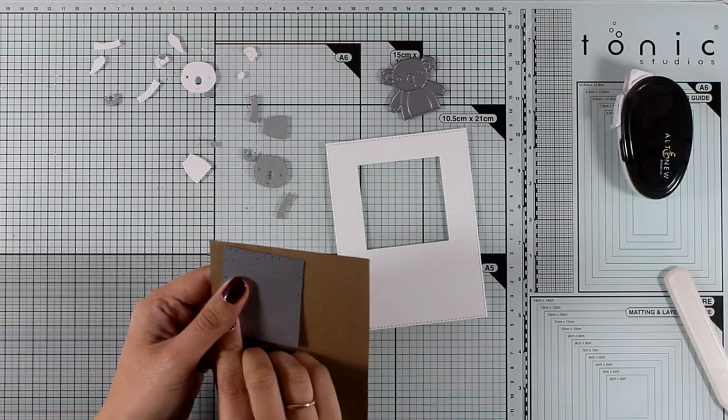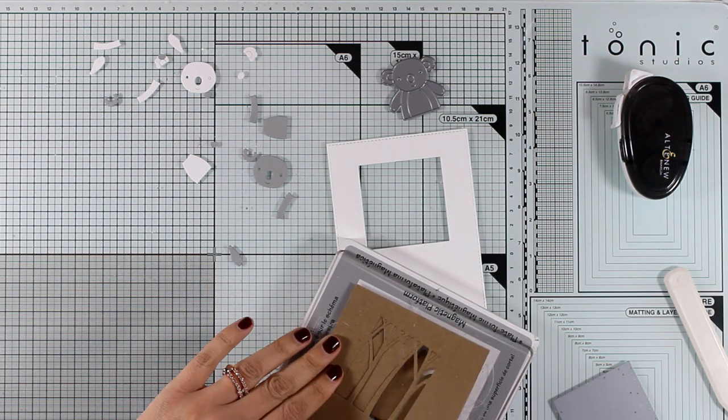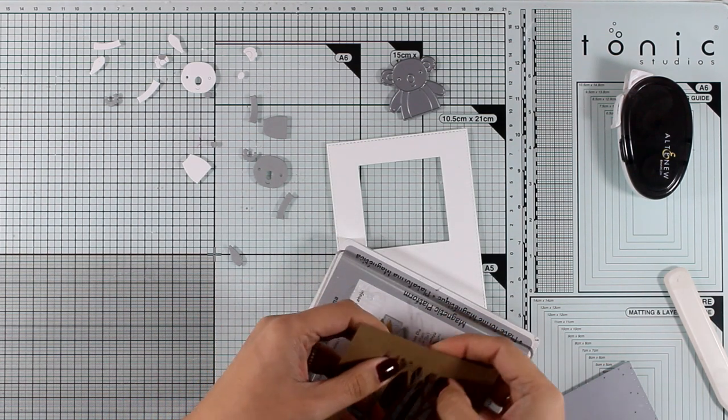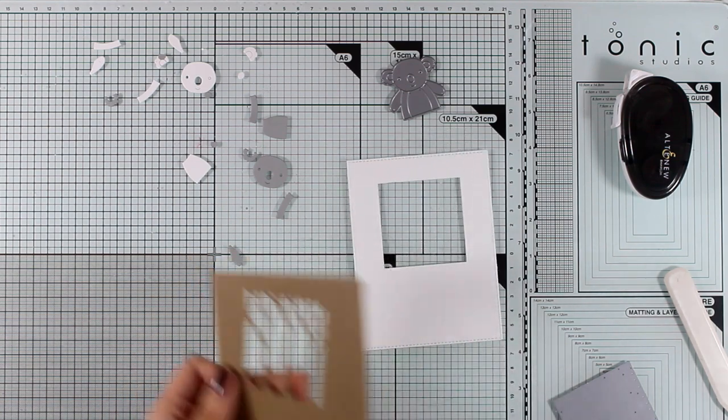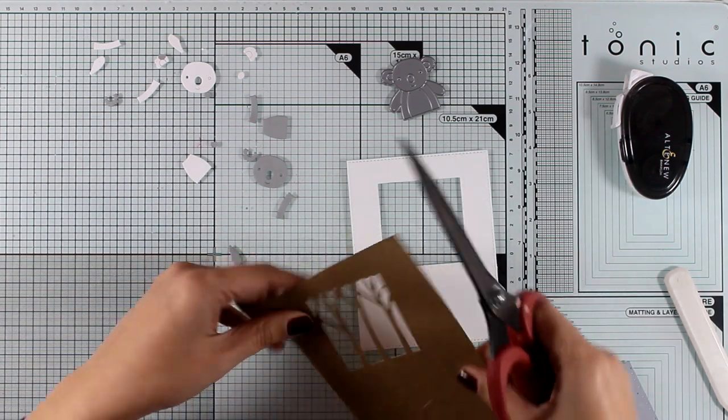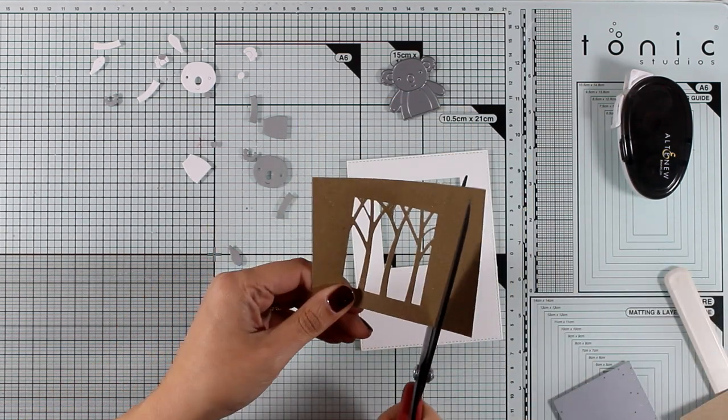Now I'm going to use this die with the trees, which I'm going to cut out from this brown cardstock. Now notice that this die cuts out only the trees without cutting out the border, so it actually creates a window.